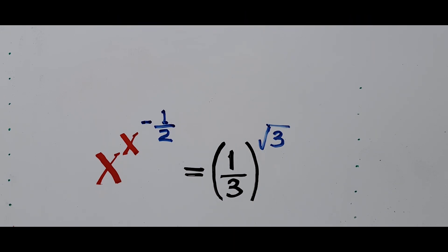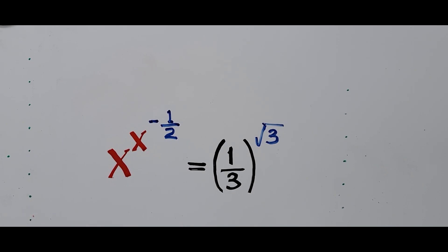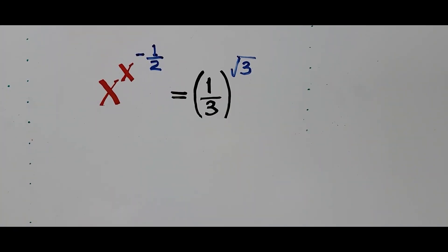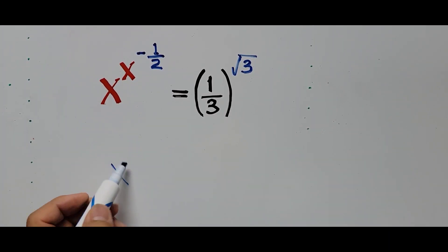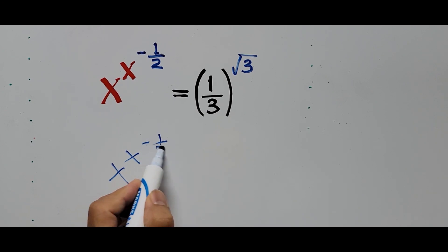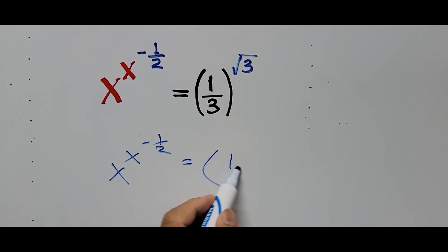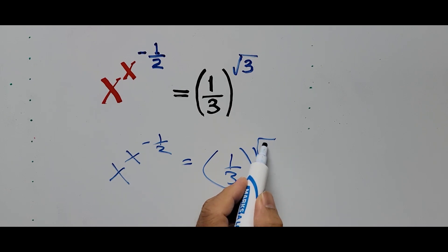Now let's start solving the exponential equation. Just by looking at the equation, some of you might know the answer already, but in case you don't, we start solving. So the equation is x to the power of x to the power of negative 1 half equals 1 third to the power of square root of 3.